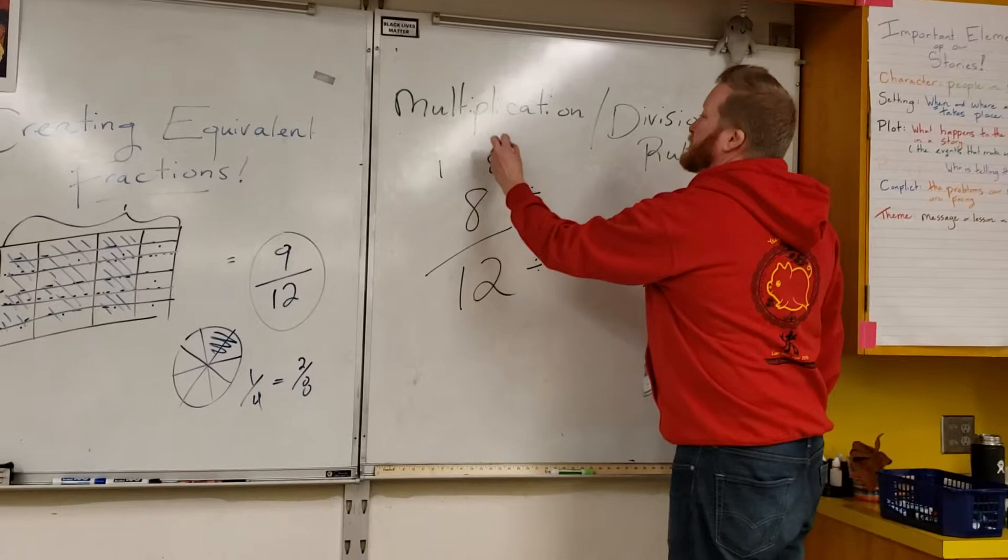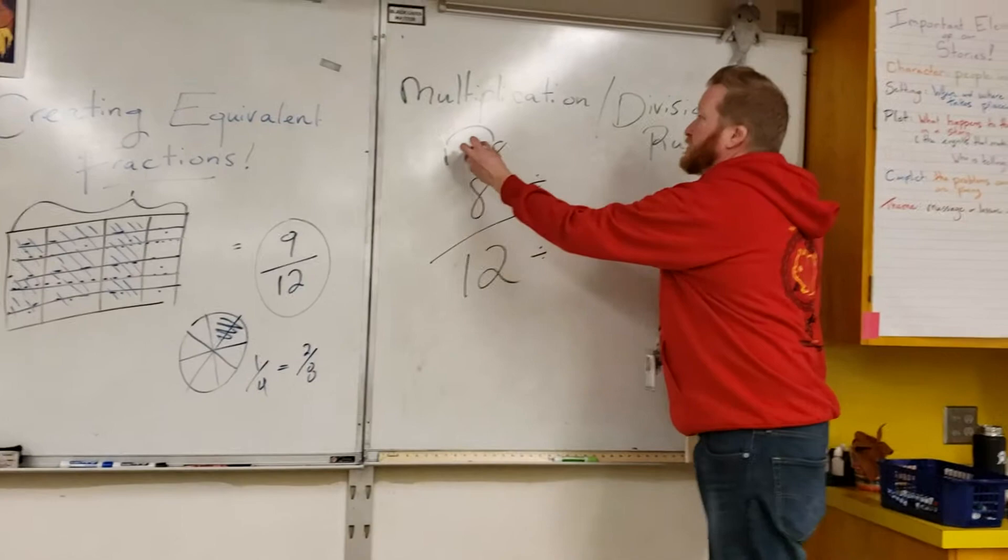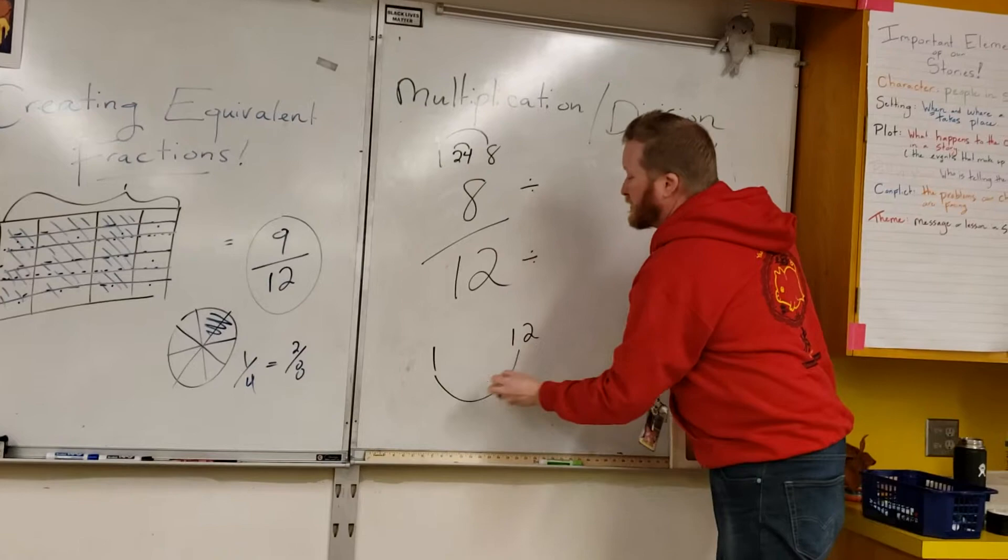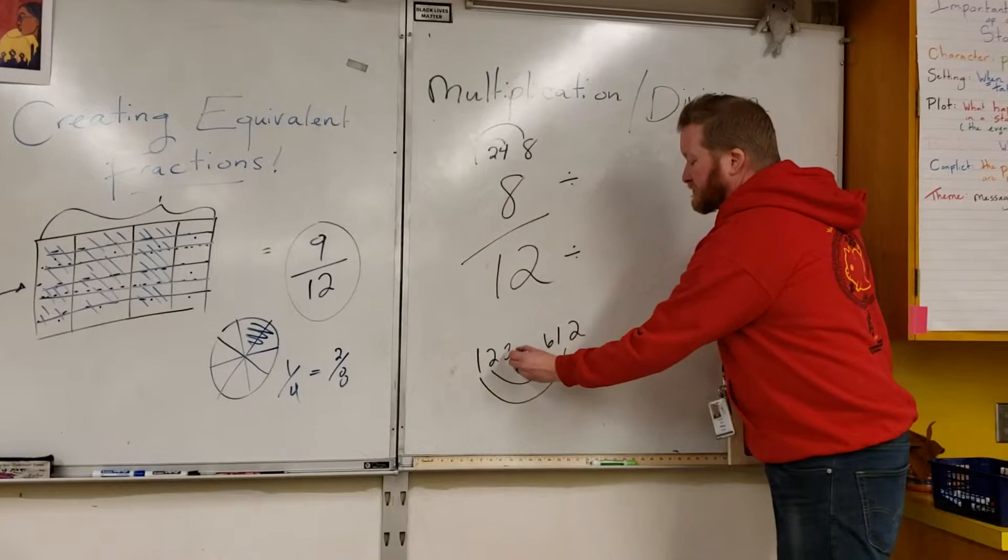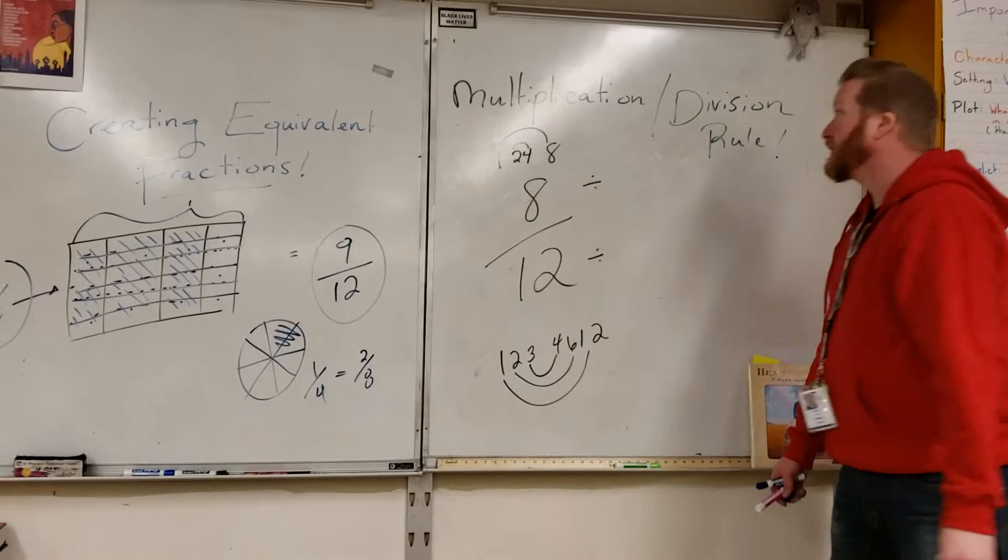So, Quincy, other than one times eight, what is another factor pair for eight? Two times four. I am going to do one times twelve. Two times six. Quincy, what is the last factor pair for twelve? Three times four.